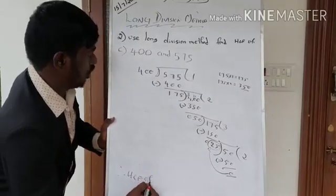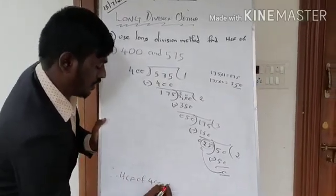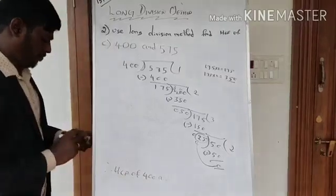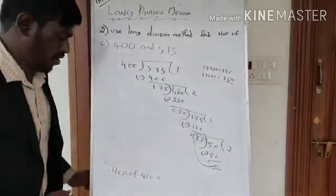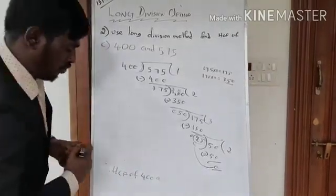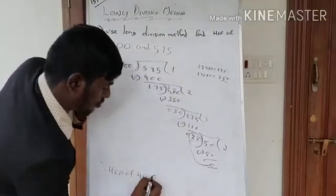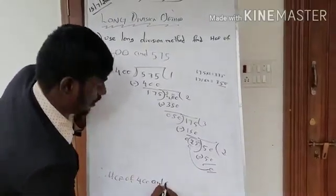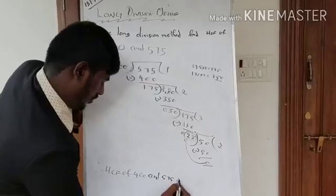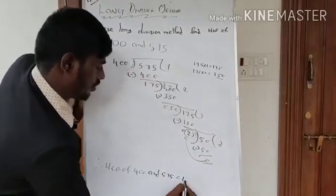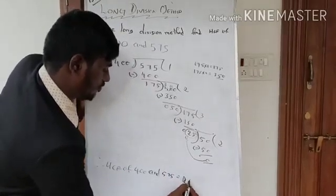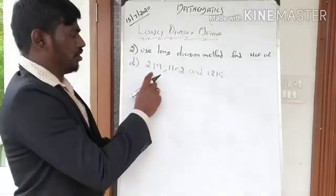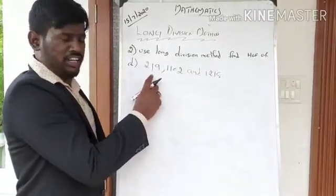25 twos are 50. Subtract: 50 minus 50 equals 0. When the remainder comes to 0, the divisor is the HCF, which is 25. Therefore HCF of 400 and 575 is equal to 25.